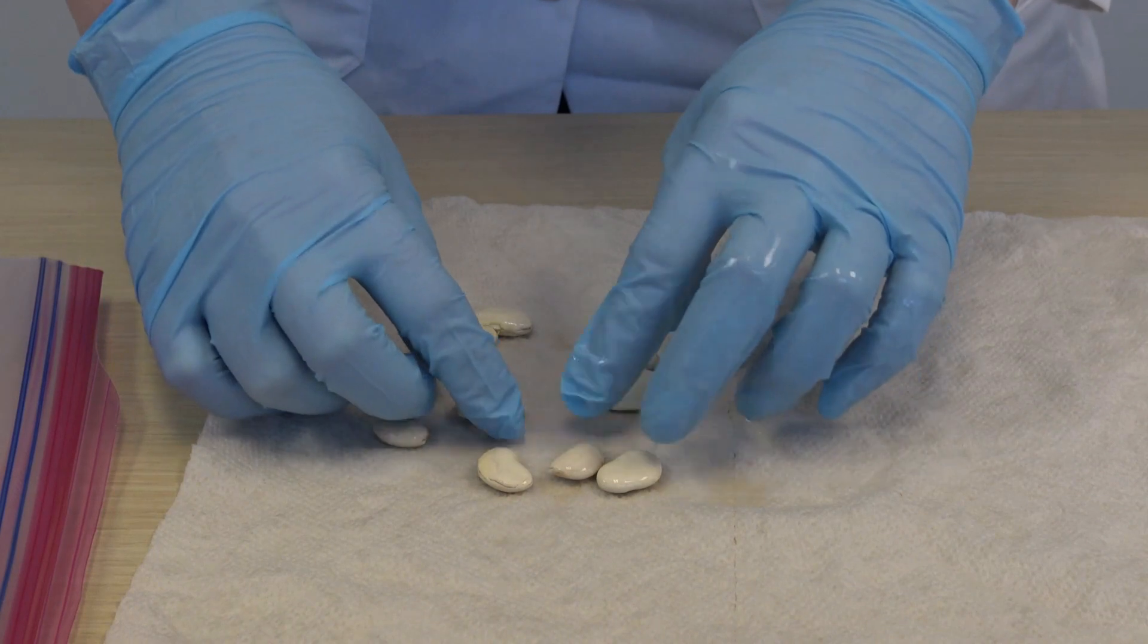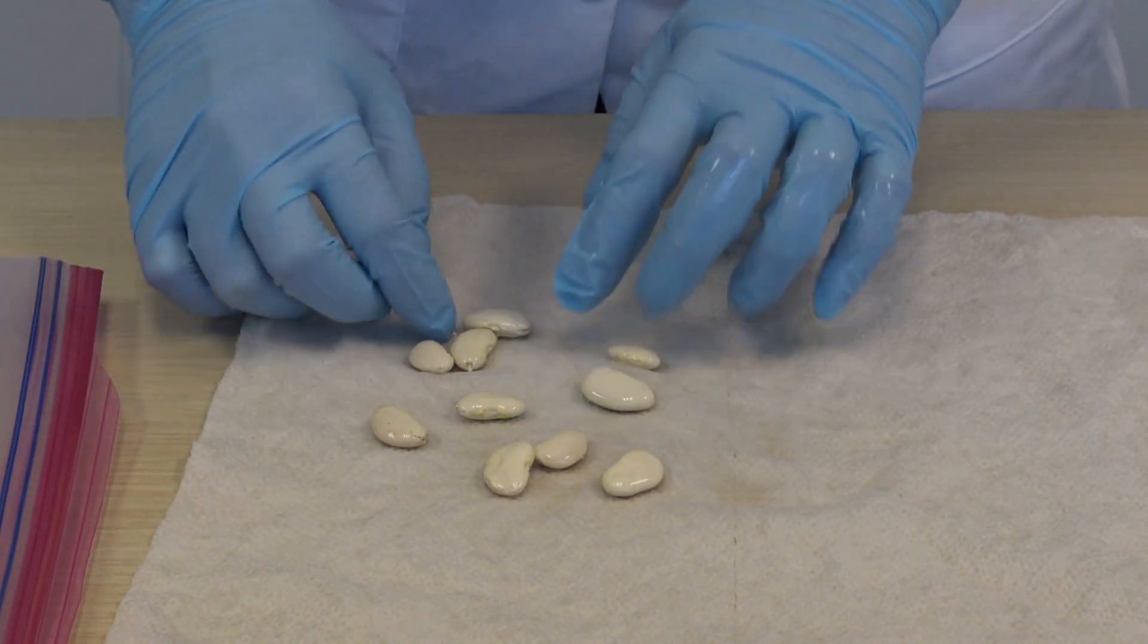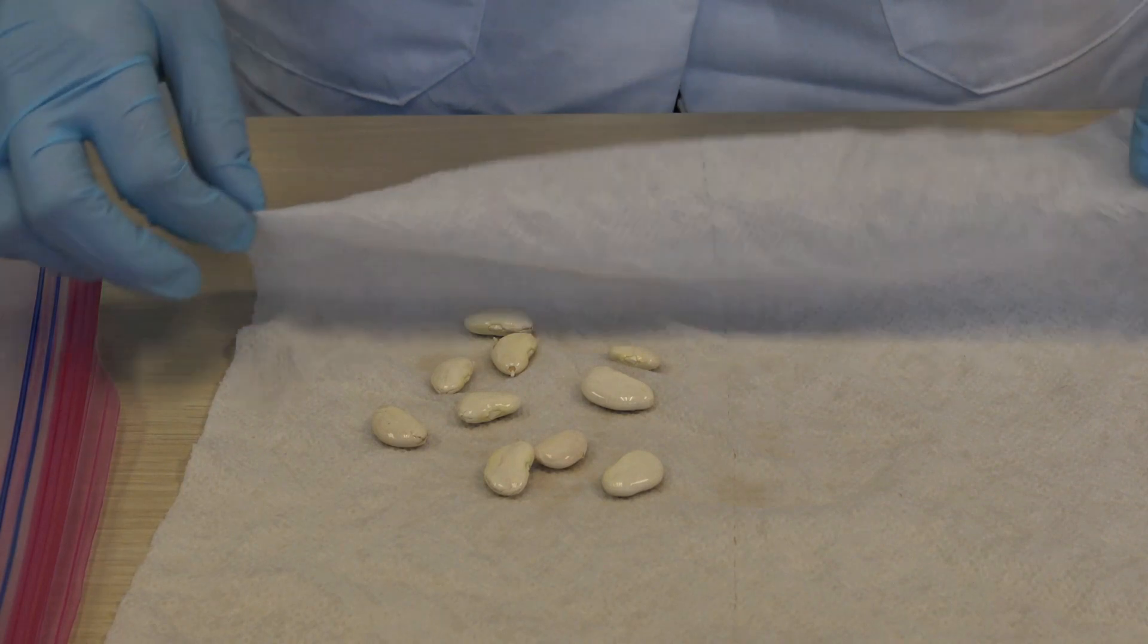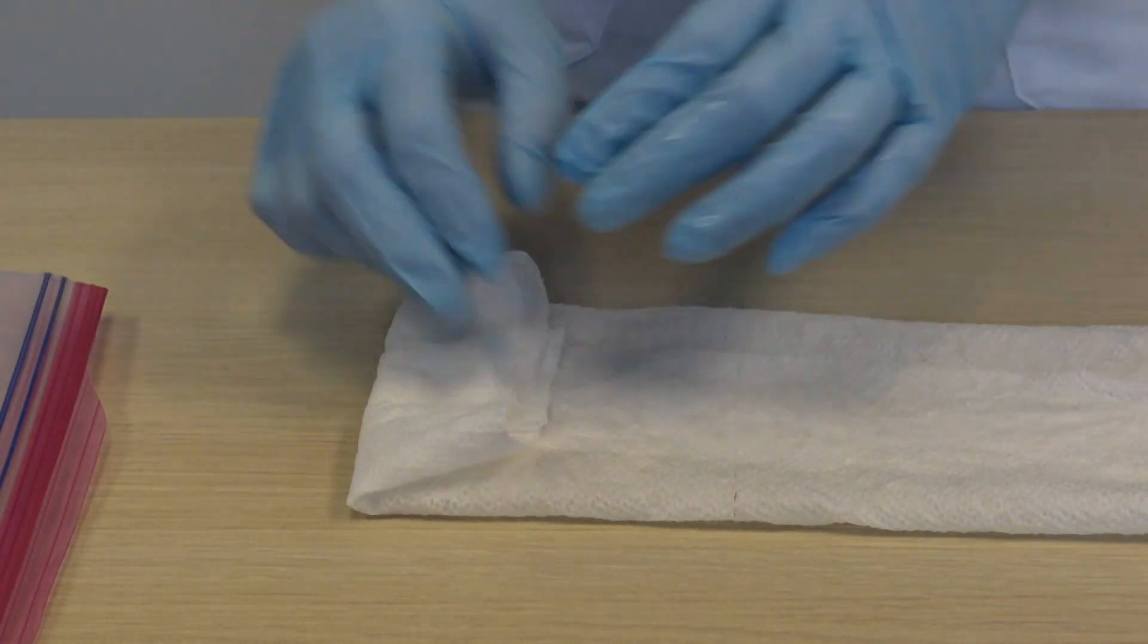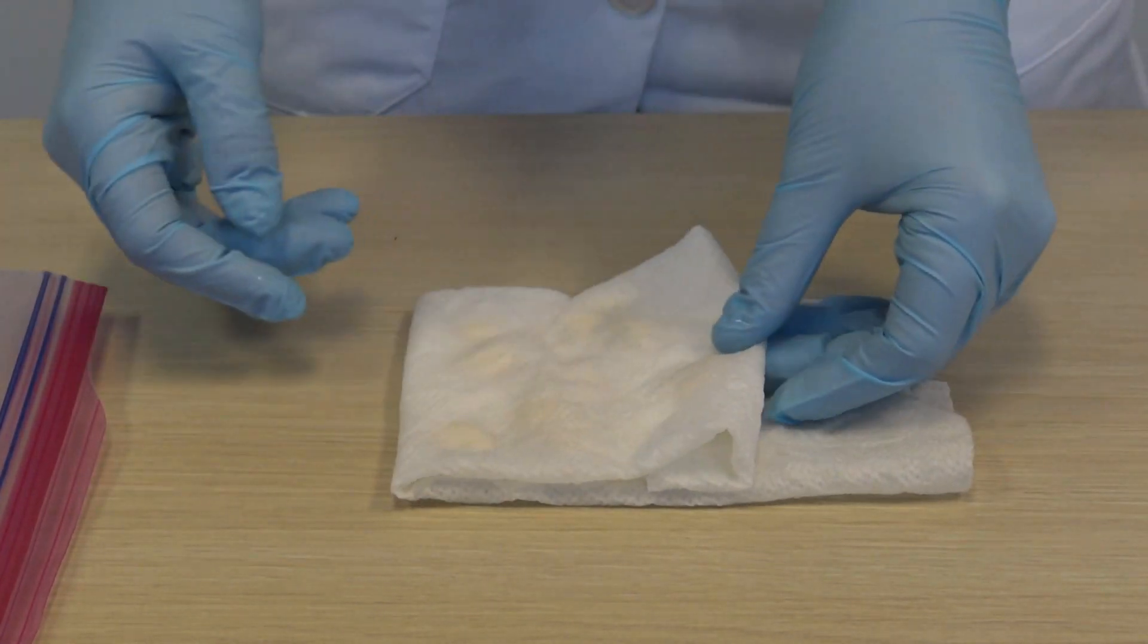Fold the paper towel so that each side of the bean seeds is being touched by the paper towel, but they're not going to fall out of it. Just fold it like that and then fold it over.